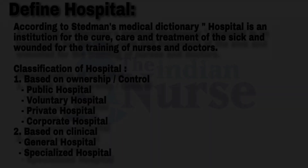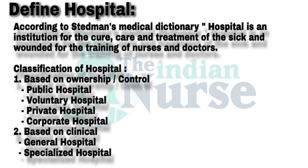Next, define hospital. According to Steedman's Medical Dictionary, hospital is an institution for the cure, care, and treatment of the sick and wounded, for the training of nurses and doctors. Classification of hospital based on control: public hospital, voluntary hospital, private hospital, and corporate hospital. Based on clinicals, it is divided into general hospital and specialized hospital.